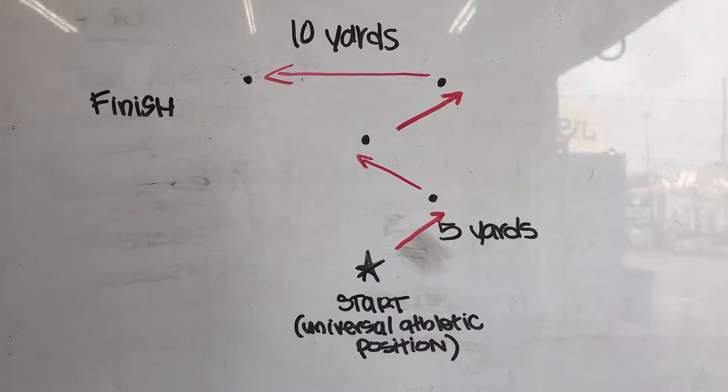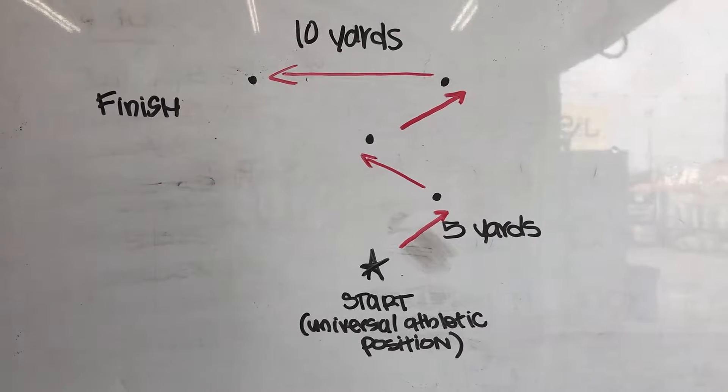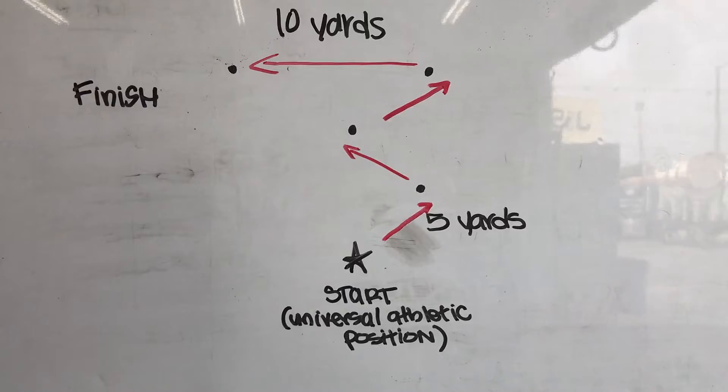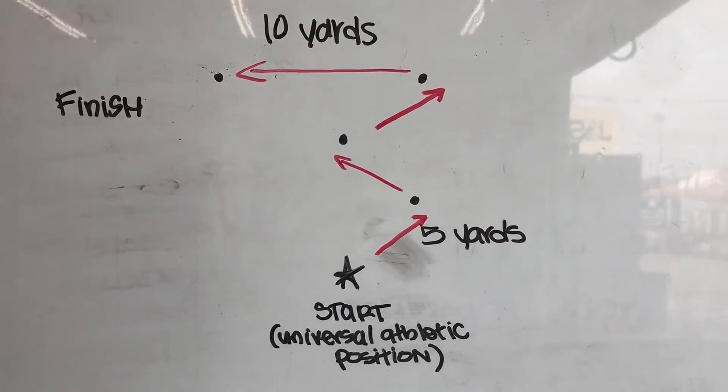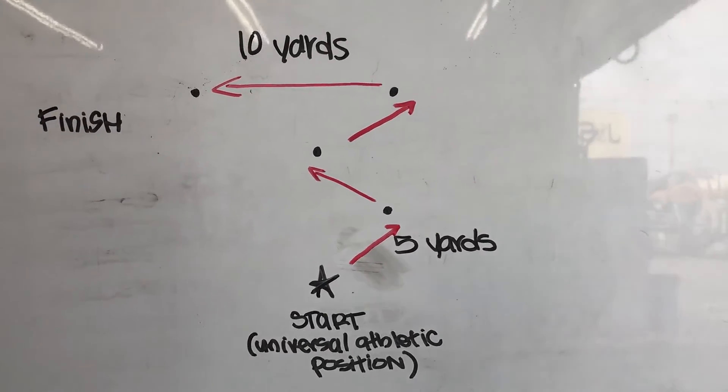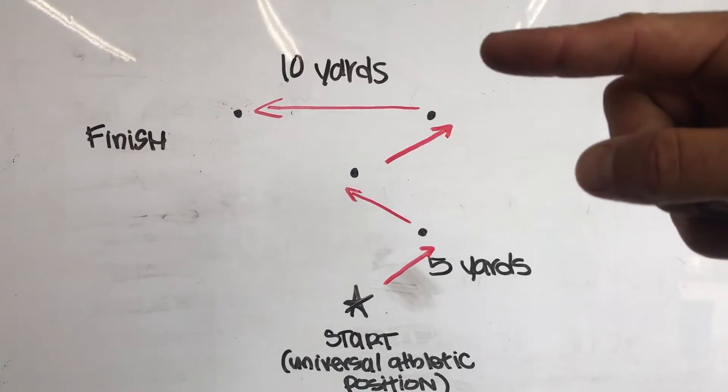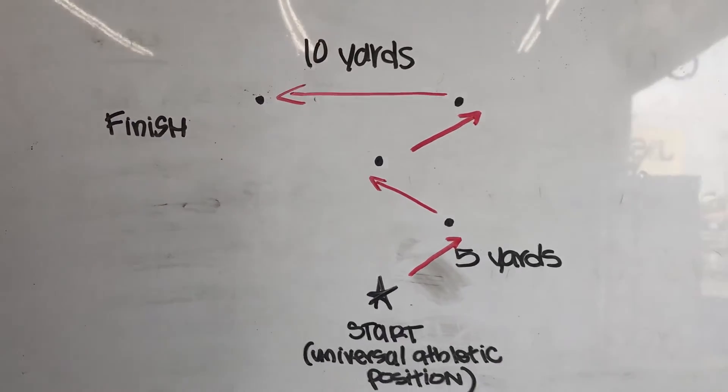Cut to your left around the second cone—same type of turn, change of direction. You're gonna head to the right, third change of direction at the top right. Then you're gonna accelerate and finish with a longer sprint.